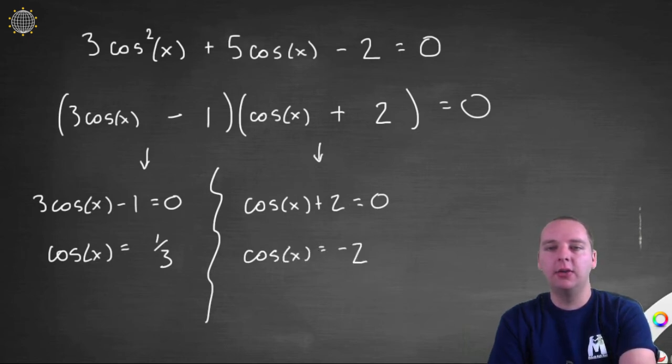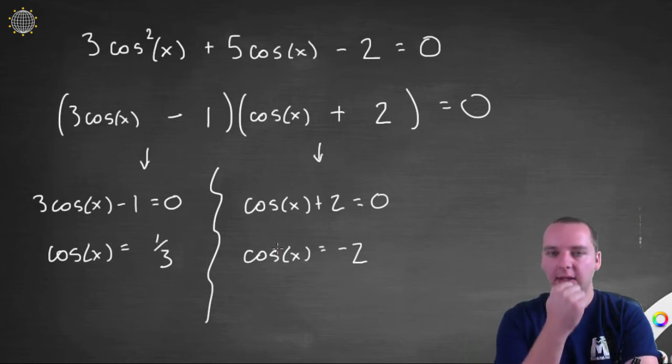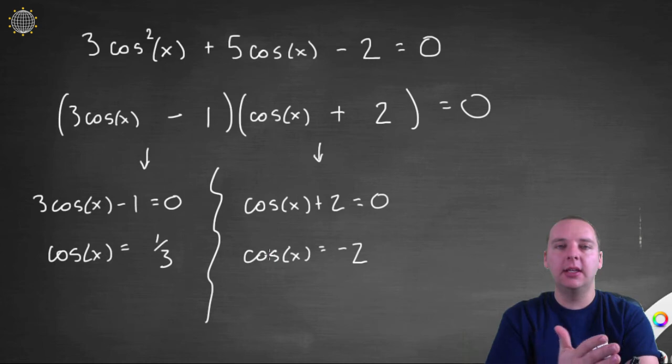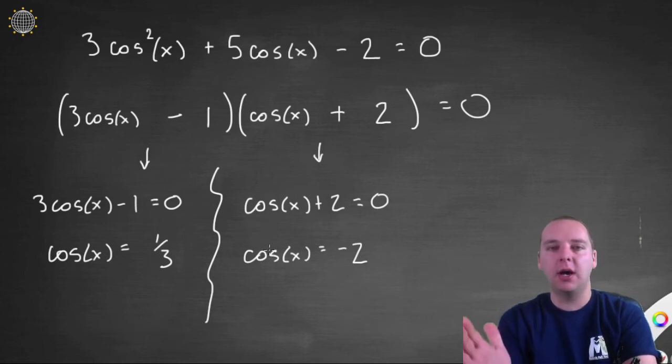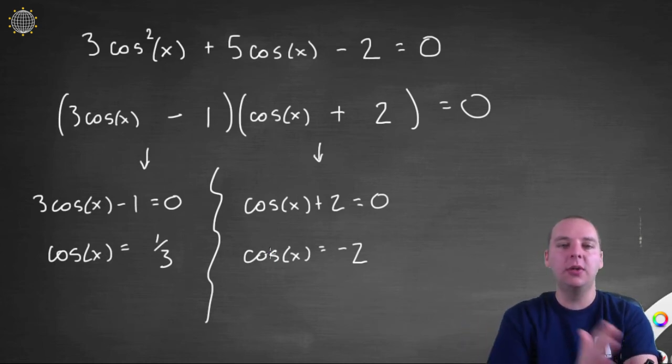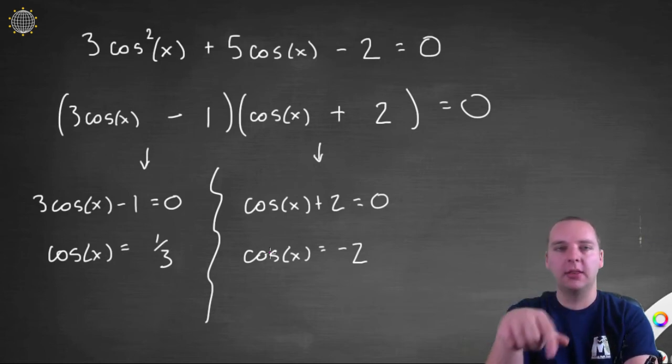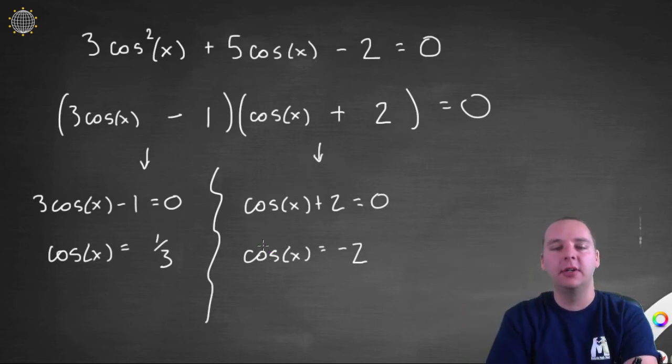Now right off the bat, I noticed something. Cosine, if you think about the unit circle, the cosine function can only be as large as positive 1 and as low as negative 1. The range of the cosine graph, if you just think about the periodic graph of the cosine function, it only goes between minus 1 and 1. There is no angle that will make cosine be negative 2. So this one will yield no solution, so we can just toss that one away.